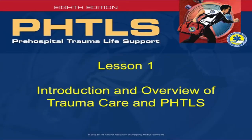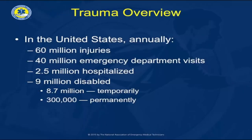Lesson 1: Introduction and Overview of Trauma Care and PHTLS. In the United States, over 60 million injuries occur annually. 40 million of those result in emergency department visits, and this does not include visits to private doctors, clinics, and other health care providers. 2.5 million of those injuries result in hospitalization, and over 9 million people each year become disabled — most of them temporarily — however about 300 to 400 thousand a year become permanently disabled, resulting in a large expense to the health care system and the workforce.